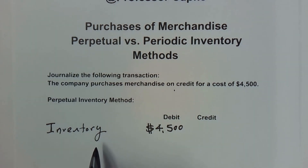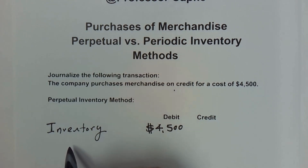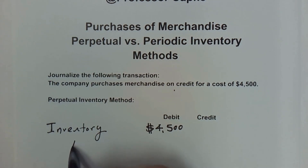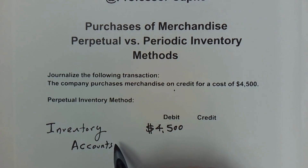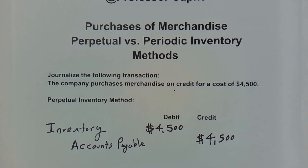We need an equal and offsetting credit. Since it is a purchase on credit, that's going to be a credit to accounts payable. Accounts payable is a liability and it increases with credits, for the same $4,500. Our transaction balances, and we have properly recorded the purchase of $4,500 worth of merchandise in the perpetual inventory system.